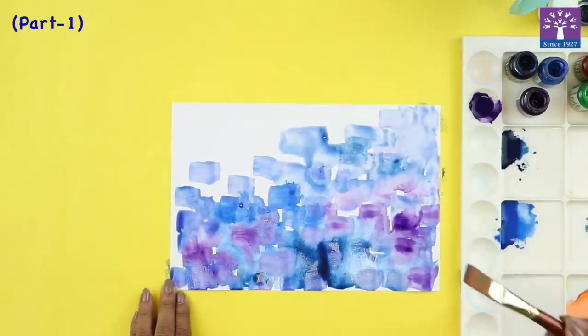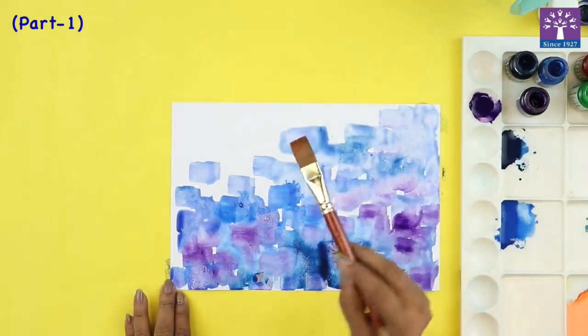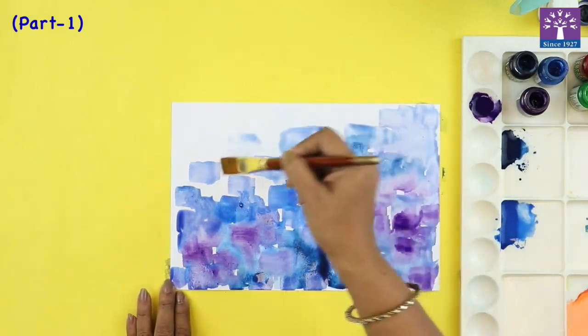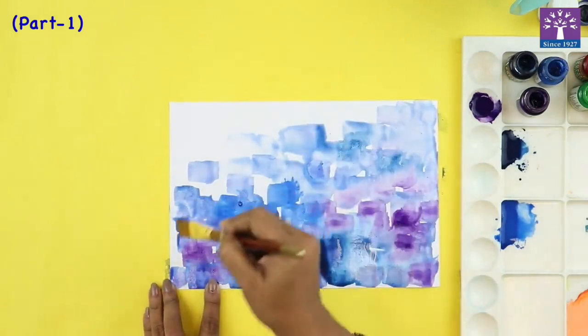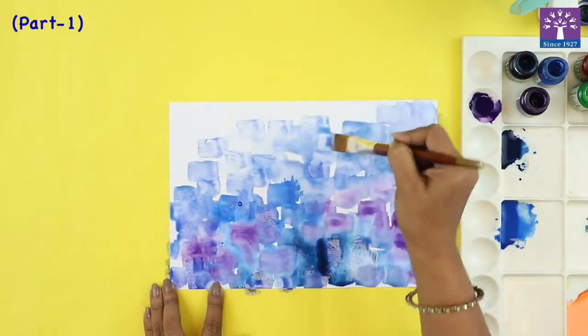When you want a light shade of that existing color, just dip your brush in water. See this is a very clean brush and just put it across, put it over and see you automatically get a light color.